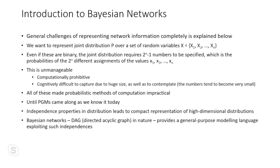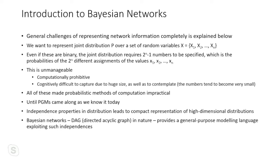Now entering Bayesian networks. The general challenge of representing joint distributions completely is exponential. Consider a set of random variables X = {X₁, …, Xₙ} as binary variables. The joint distribution requires 2ⁿ different assignments — the space is exponential. This is computationally prohibitive and cognitively unmanageable. PGMs came along to solve this by exploiting independence properties.